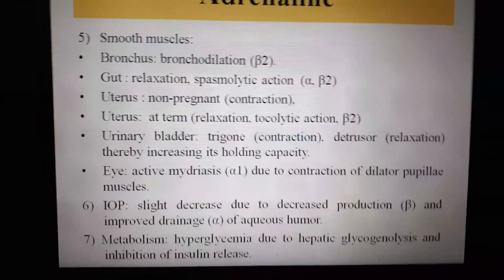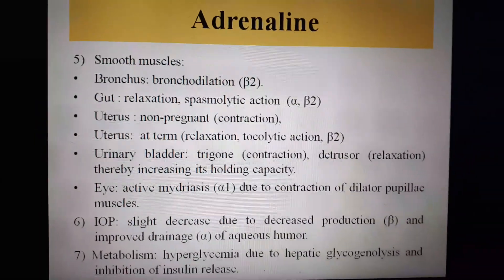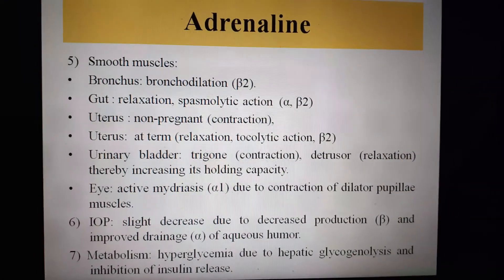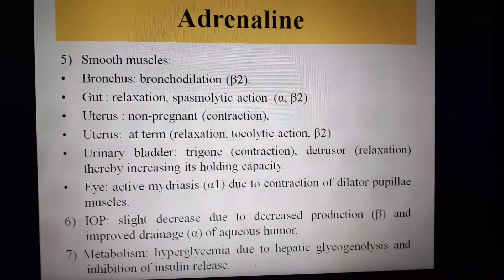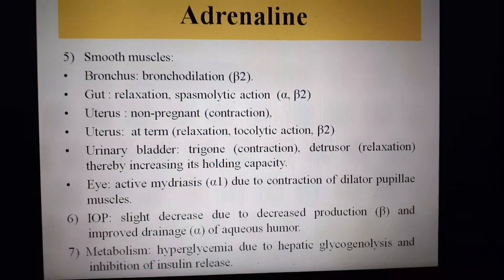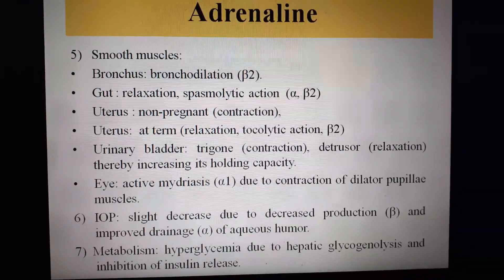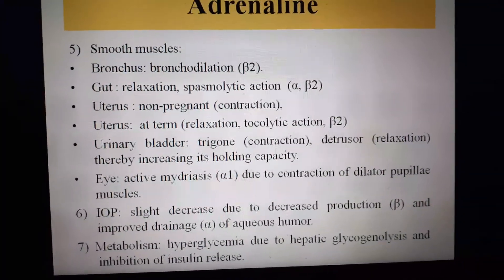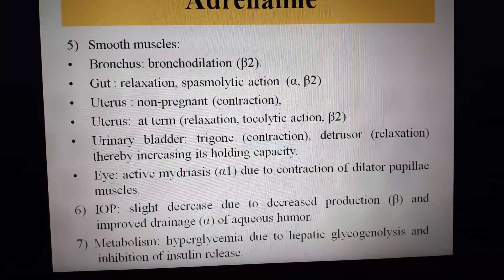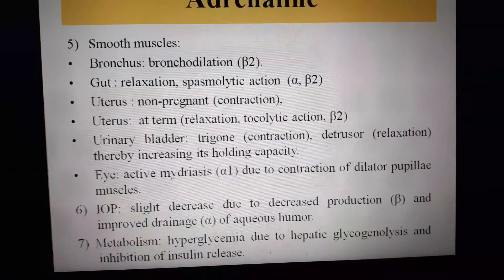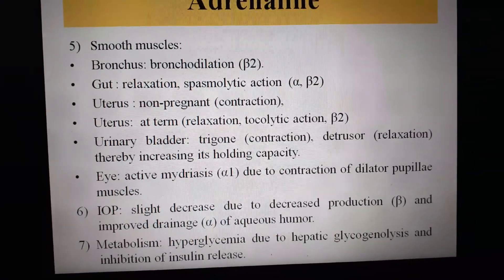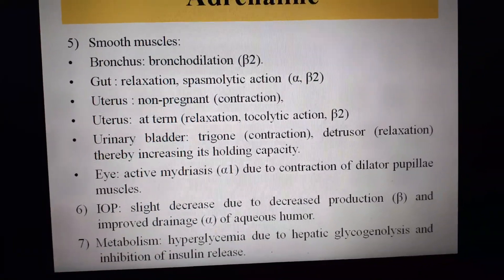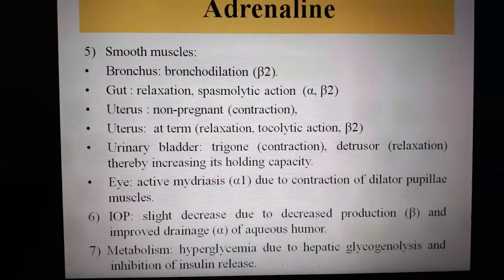Regarding the effect of Adrenaline on smooth muscles: its action is mainly due to beta-2 receptors. In the bronchus, it causes bronchodilation, a beta-2 mediated action. In the gut, both alpha and beta receptors mediate a relaxant effect. This is in contrast to other alpha receptor effects elsewhere in the body — in most sites alpha receptors mediate contraction, but in the GIT they mediate relaxation, producing a spasmolytic action.